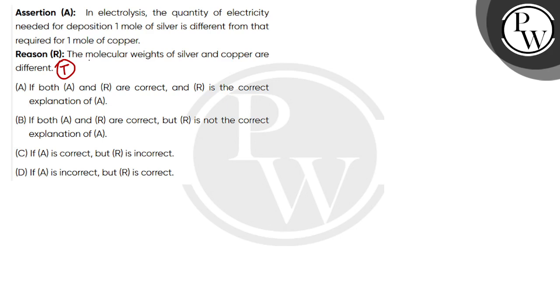Electrolysis is the process in which electricity helps us chemical reaction. So, the quantity of electricity needed for deposition of one mole of silver. If I took 1 mole of Ag positive, I need 1 mole of electron, then I will deposit 1 mole of silver metal on cathode.